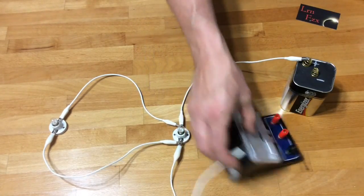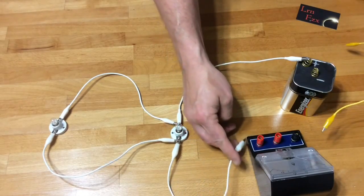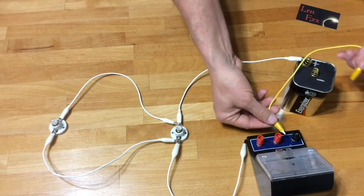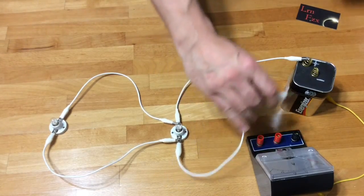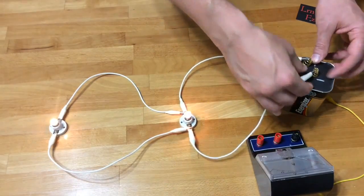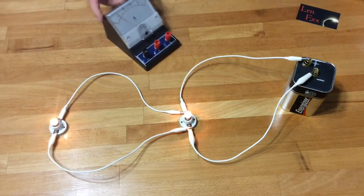If the ammeter goes backwards, needle turns left rather than goes right, you've connected it backwards. Positive should be to positive, negative to negative. Always then reconnect to the original circuit. I've shown it here in white.